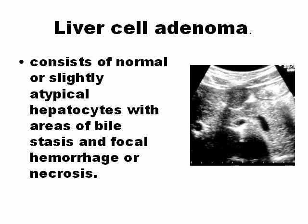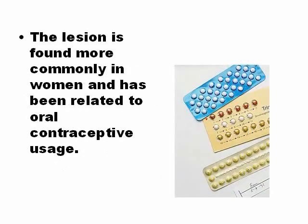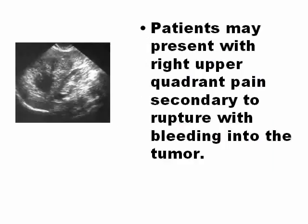Hepatic adenoma shows osteoplastia of the liver with only slightly atypical hepatocytes — very normal hepatocytes. The importance of this lesion is its relation with oral contraceptive usage. Patients with this pathology can have right upper quadrant pain secondary to rupture, but not always, with bleeding into the tumor.